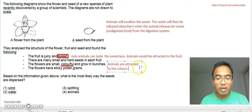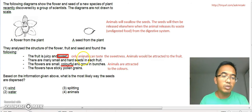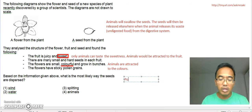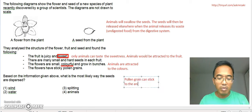And the flowers have sticky pollen grain. That means it can also stick to the animals. So what does that mean? It means the pollen grain can stick to the animals that visit the flowers.